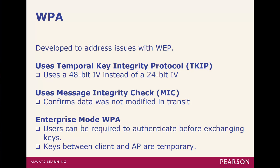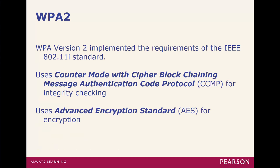Because WEP was so easy to break, WPA was implemented. WPA uses the Temporal Key Integrity Protocol (TKIP), a 48-bit instead of 24-bit key, and a Message Integrity Check (MIC) to confirm that data wasn't modified in transit. It also has an enterprise mode WPA that works with authentication for key exchanges using some type of RADIUS — temporary keys are used between a client and an access point. WPA takes about eight minutes to break.